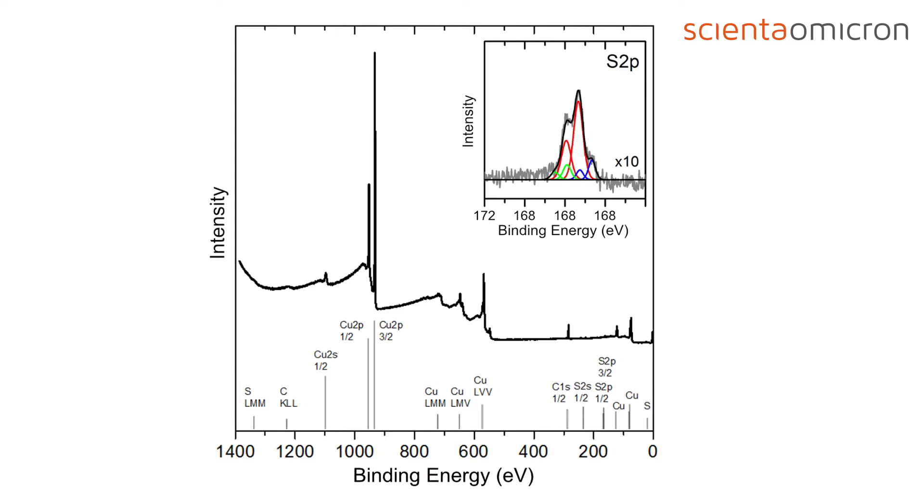Here, you can see an example XPS survey spectrum of a self-assembled monolayer on a copper surface. The survey scan gives a good overview of the elements present at the sample surface. Elemental composition and chemical states can be analyzed in more detail from high-resolution spectra, as shown in the insert in the top right.